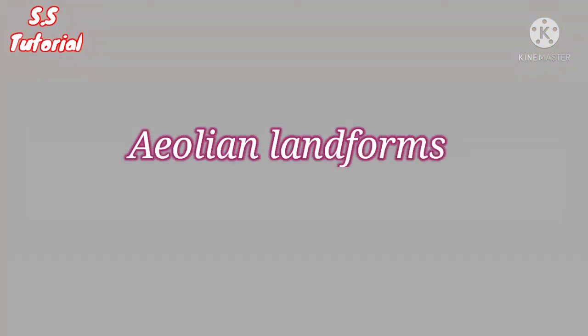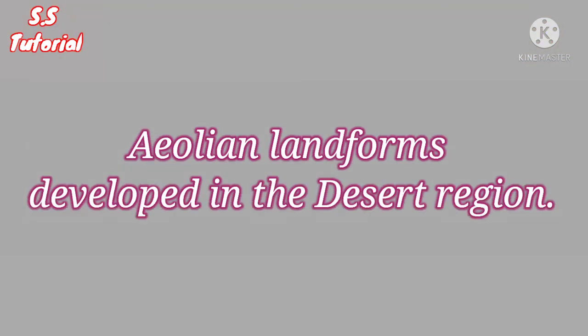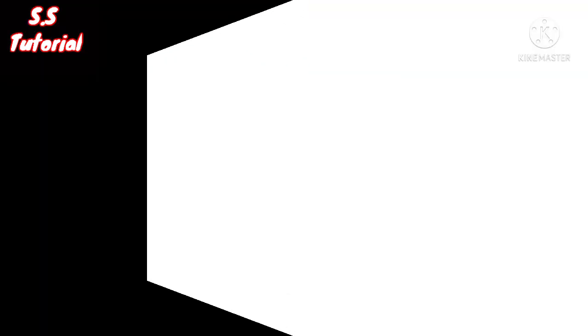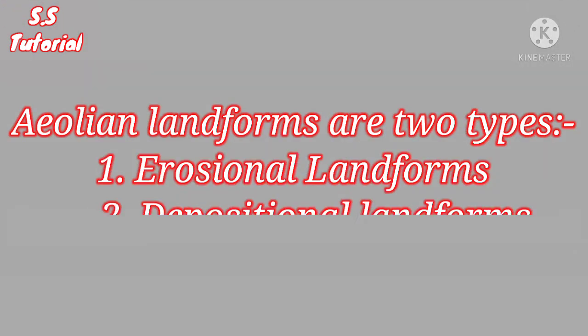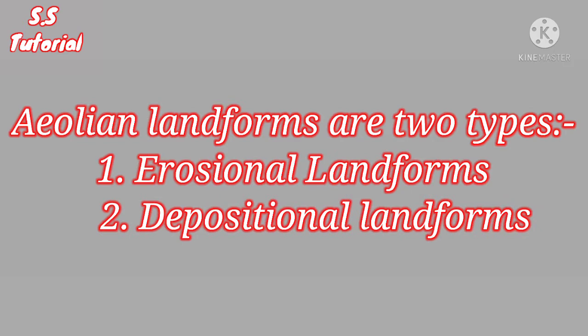In this video we will know about Aeolian Landforms which are developed in the desert region. Let's find out which landforms are developed in the desert region by the Aeolian process. Aeolian Landforms are of two types: one is erosional landform and the other is depositional landform.